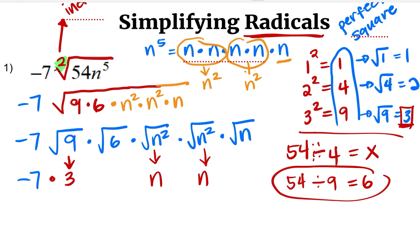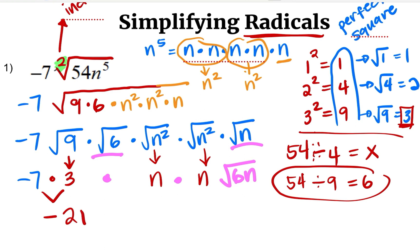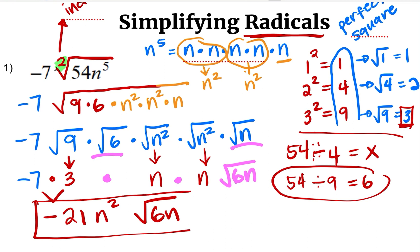The square root of six and n is going to stay inside the radical, while each of these numbers will be separated by a period, meaning multiplication. Let's simplify: negative seven times three is negative 21. N times n is n squared — we add the exponents of the same base. So we get negative 21 n squared times the square root of 6n. And there is our answer.